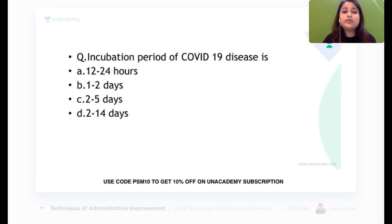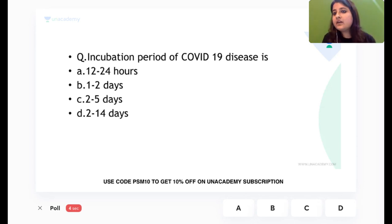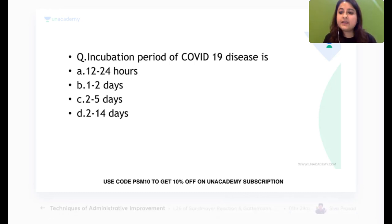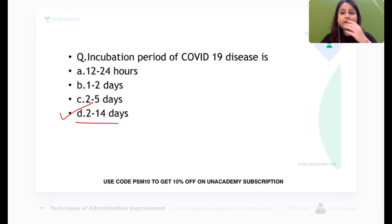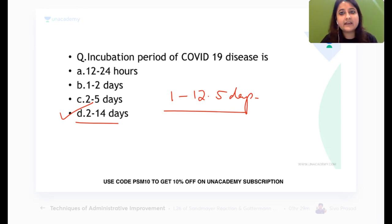Now let's move to epidemiology. The incubation period of COVID-19 is 2 to 14 days. To recap: incubation period is the time between entry of the organism and appearance of the first sign and symptom. It can also be stated as 1 to 12.5 days in some references.